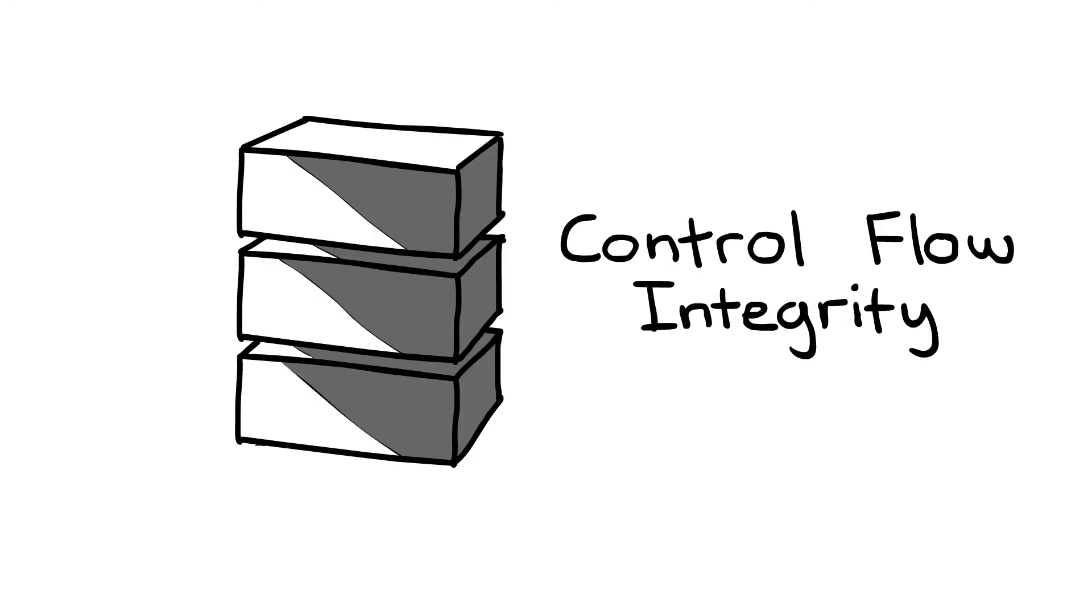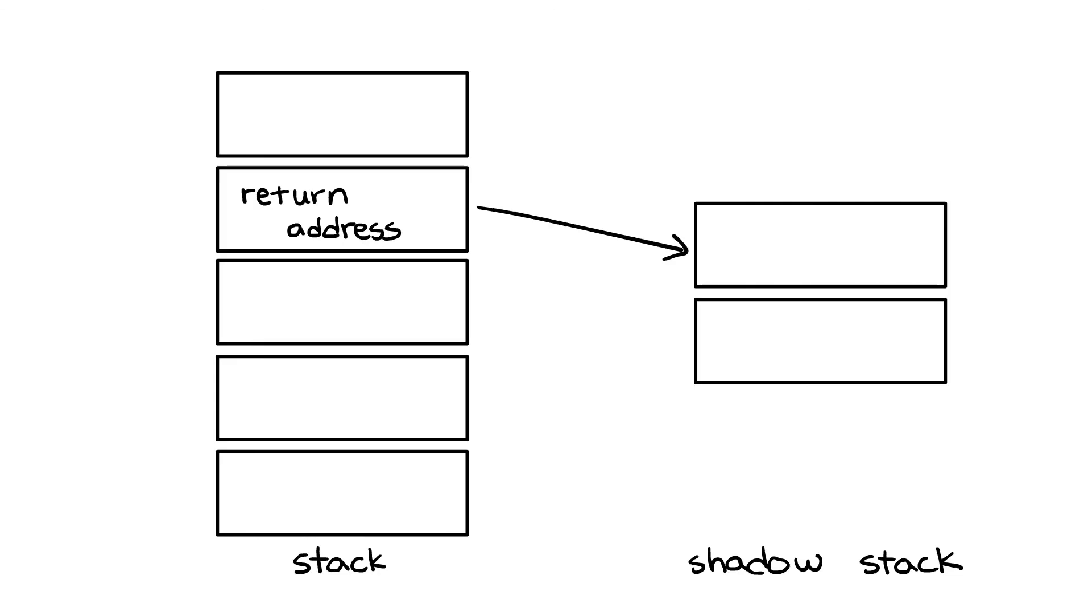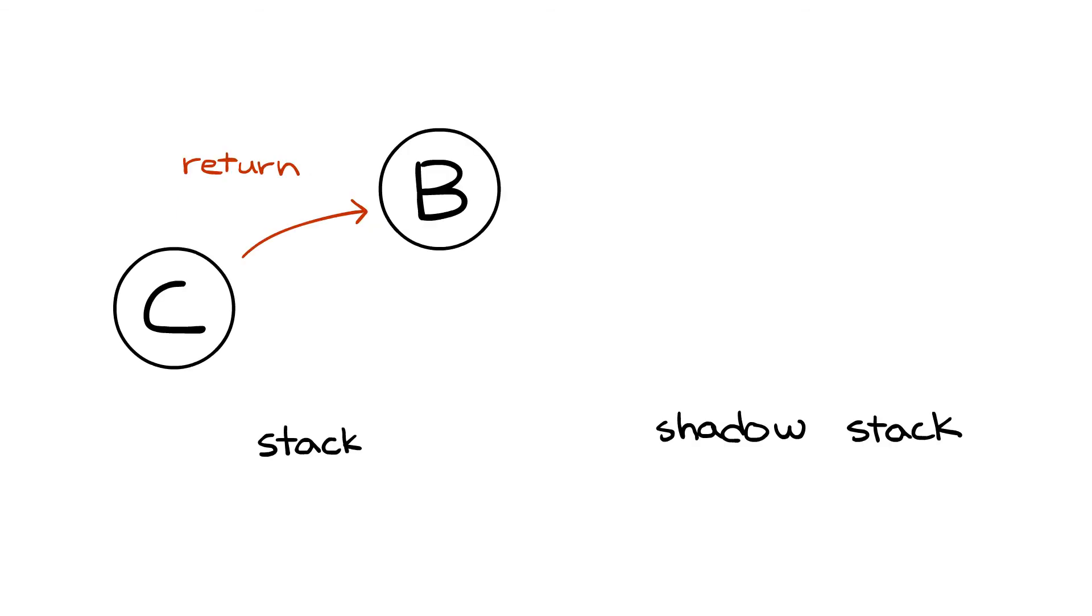To review, a shadow stack enforces control flow integrity by keeping a copy of the return address and crashes if the return address on the real stack doesn't match the shadow stack. On a control flow graph, that would look like this. The shadow stack makes a copy of the return address and crashes the program if the return address doesn't equal the original value.